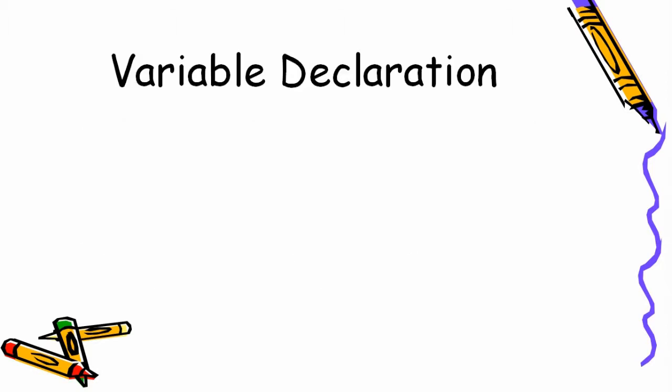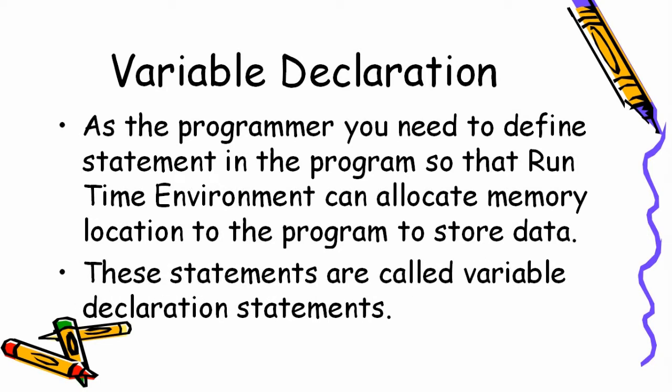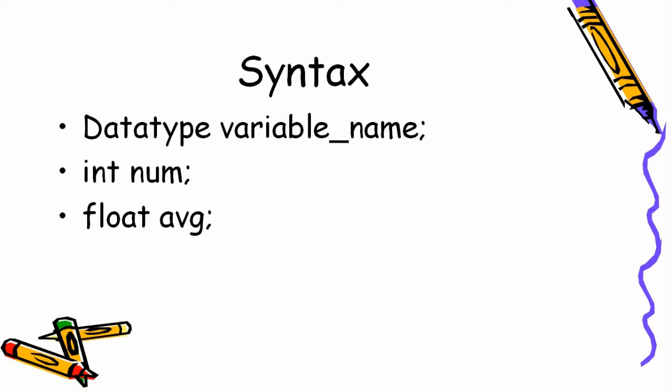So how to declare a variable — variable declaration कैसे करेंगे? As the programmer, you need to define statements in the program so that the runtime environment can allocate a memory location to store data. These statements are called variable declaration statements. The syntax is: first write the data type, then the variable name. For example, 'int num' — int is the data type and num is the variable name. Similarly, 'float avg' — float is the data type and avg is the variable name.